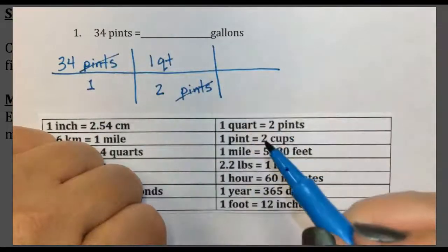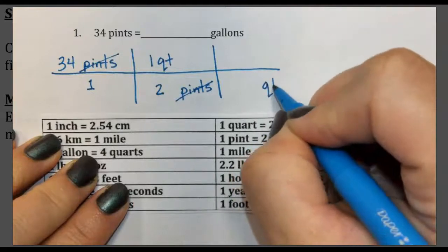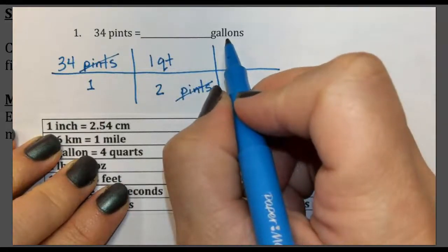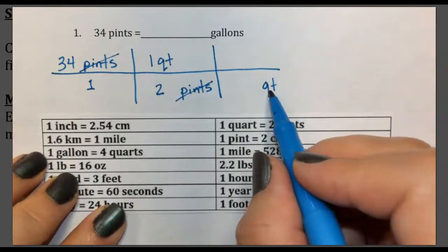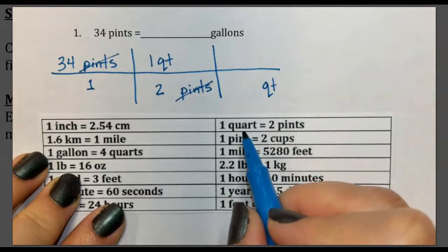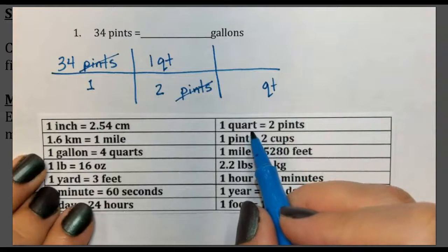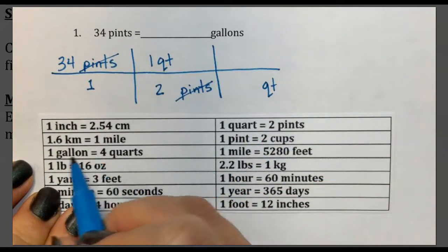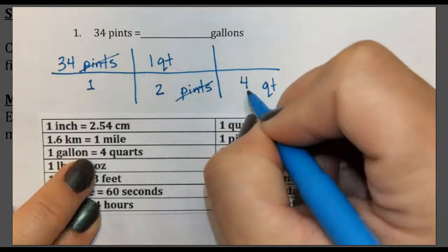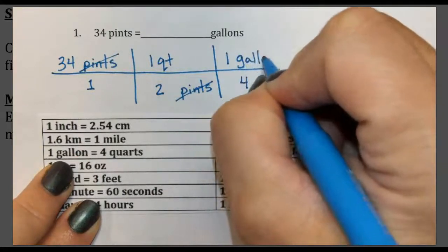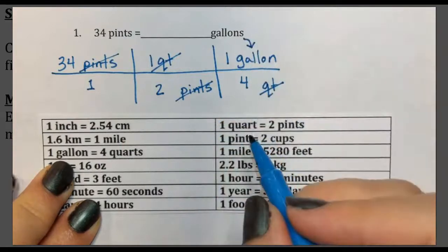Notice that pints have canceled. Now I need quarts to cancel, so I bring them down to the bottom of the next step. How did I know not to stop there? Because I'm trying to end on gallons, and I'm not at gallons yet. I bring quarts down and look for a conversion with quarts. We don't want to go back to pints — we want to keep moving forward. We use four quarts equals one gallon. Quarts cancel, and since I have gallons, I can stop setting up my problem.